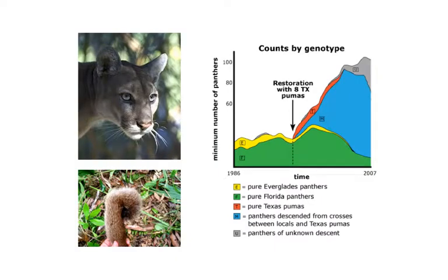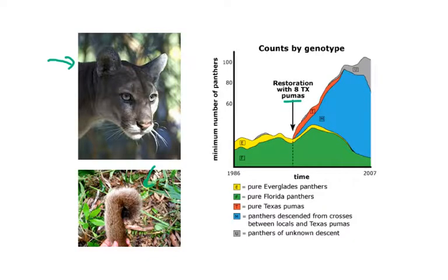A classic example of a success story in terms of translocation and genetic rescue is with the Florida puma, shown here on the left. This was an inbred population suffering from all types of problems, including phenotypic effects like the kinked tail shown here. What they did was move eight pumas from Texas into this Florida population. In this graph, the y-axis is the number of panthers and the x-axis is time. The arrow indicates when individuals were translocated, and we again have evidence of genetic rescue because population numbers drastically increased after this addition of new individuals — this assisted gene flow.